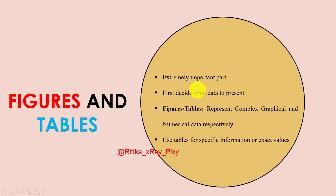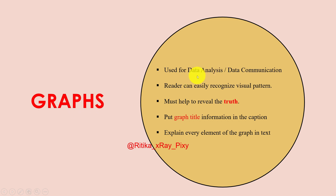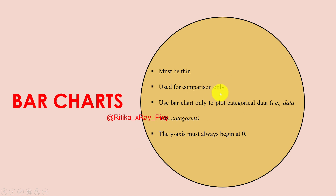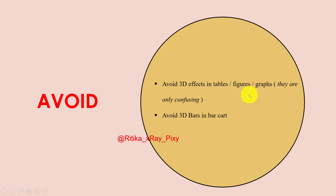Figures and tables are extremely important parts of a research paper. First, decide what data to present. In figures you can represent complex graphical data, and in tables you can represent numerical data — use tables for specific information like exact values. Graphs are used for data analysis; readers can easily recognize visual patterns. Put the graph title information in the caption and explain every element used in the graph. Bar charts can be used for comparison. Avoid any 3D effects in tables, figures, and graphs because they are confusing.